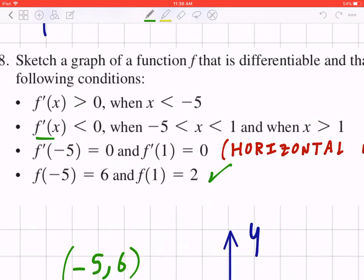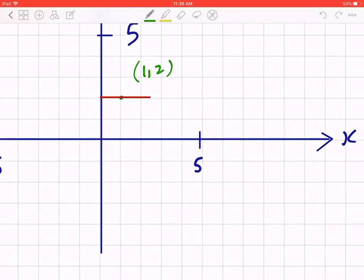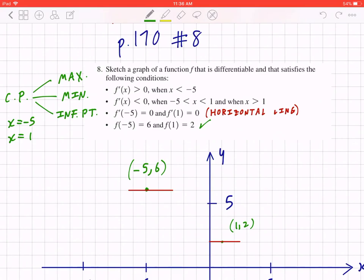Likewise, if you look at the second condition, the function is decreasing when it's between negative 5 and 1 and when it's greater than 1. And again, decreasing means it's like that, or it could look something like that, or something like that. Likewise, same idea here. This is decreasing. It could be like that, or like that. Now, by inspection, you can tell that negative 5, 6 is going to be a maximum.